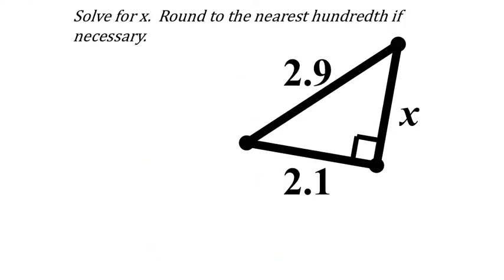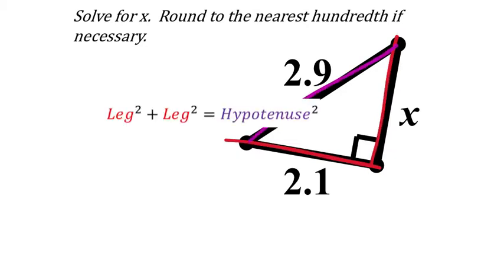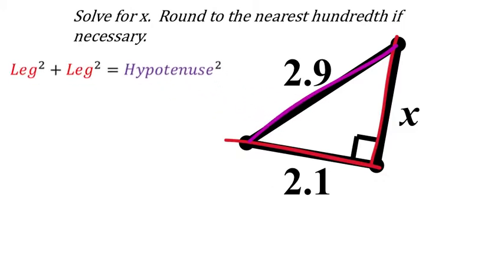I don't think we saw any decimals in the examples for the Pythagorean theorem. But this is a Pythagorean theorem problem — we're looking for that missing value, which is a leg. We'll round to the nearest hundredth if necessary. Here's one leg: 2.1. And the hypotenuse is 2.9. The Pythagorean theorem.